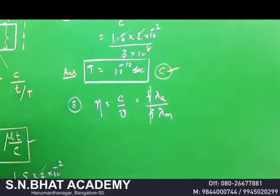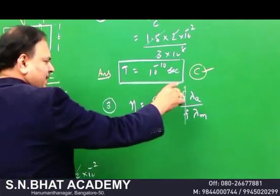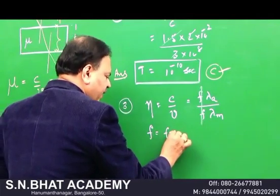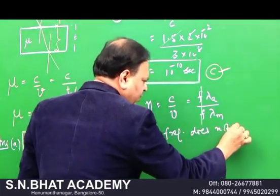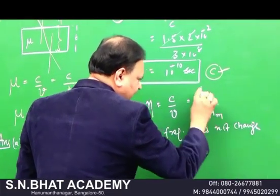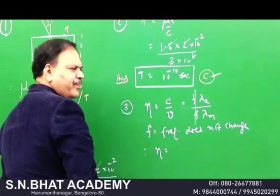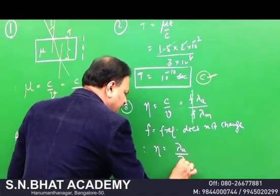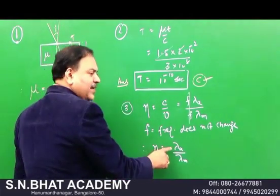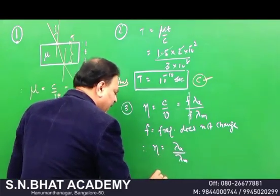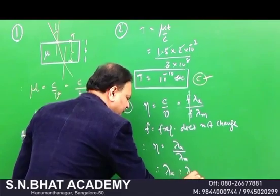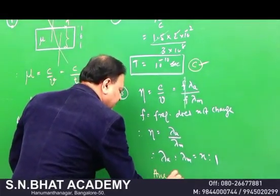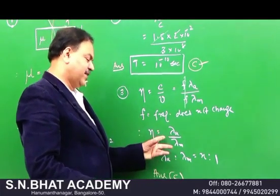A very important principle: when light passes from one medium to another, frequency does not change. So frequency f cancels, giving n = λ_air / λ_medium. The ratio of wavelength in air to wavelength in the medium is n : 1. No calculation needed — the answer is option B.